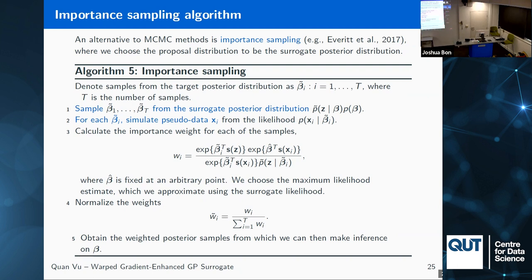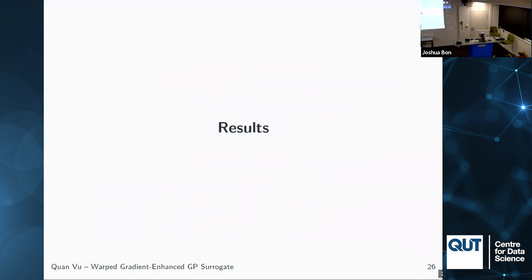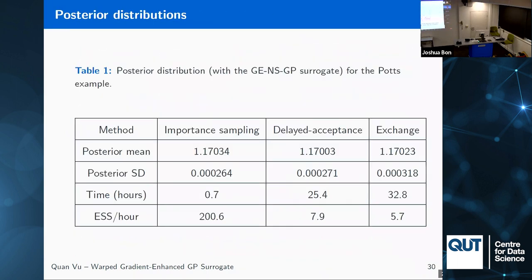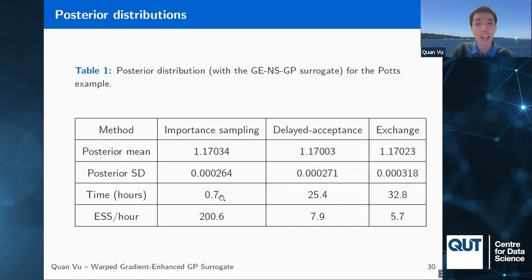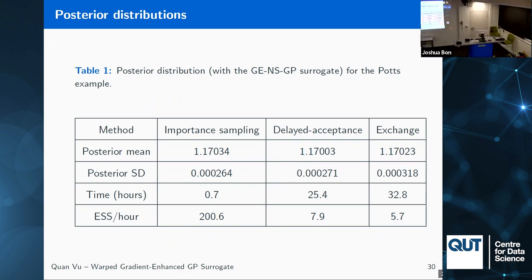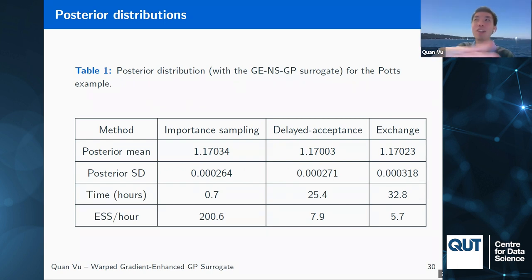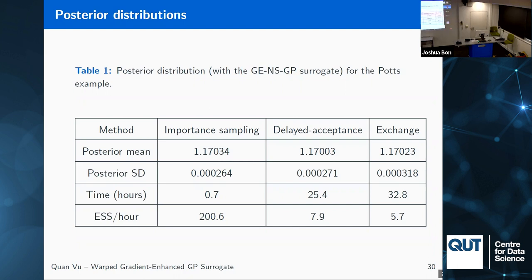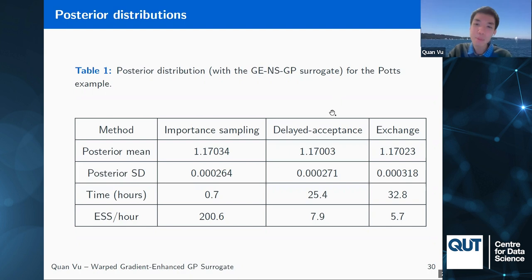Follow-up clarification: The wall time for importance sampling is actual run time, not CPU hours. In terms of CPU hours, they would be similar since the same number of simulations are performed. Delayed acceptance, however, actually saves computing time by filtering out bad samples before simulation occurs. The host thanks Kwan for the talk, noting the value of jointly modeling the Gaussian process and its gradient simultaneously.